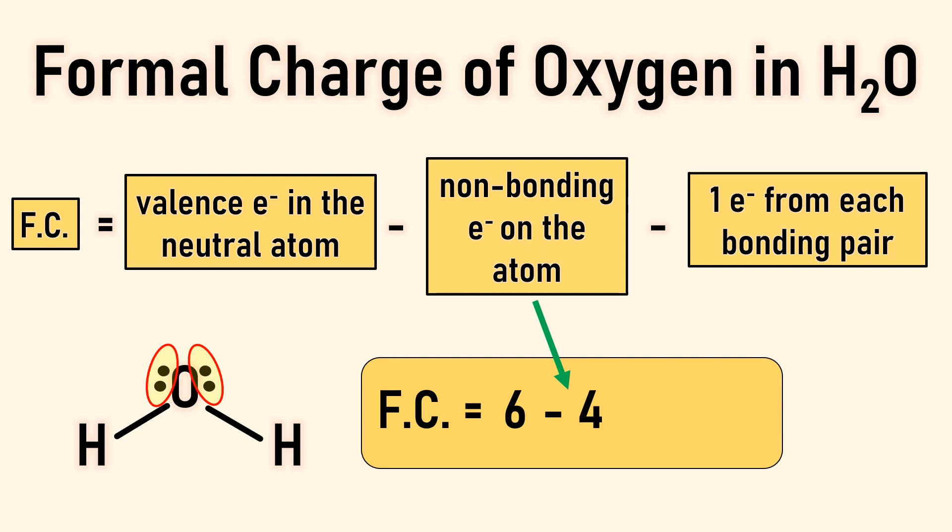Finally, let's visualize the covalent bonds as a shared pair of electrons. The oxygen owns one of the electrons in each shared pair. Hydrogen owns the other electron. They share these electrons to satisfy the octet rule for oxygen and the duet rule for hydrogen. Therefore, we can subtract one electron from each bonding pair, in this case two electrons from two bonding pairs, and the formal charge is zero.